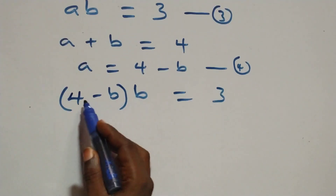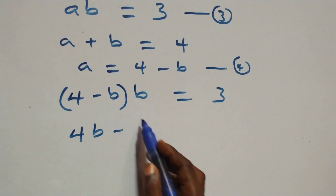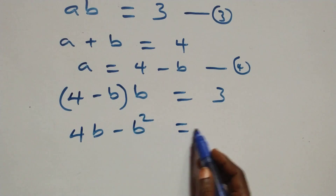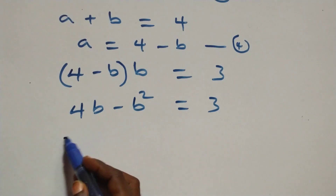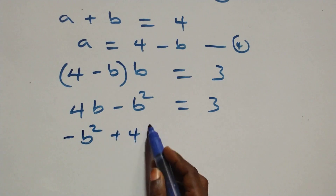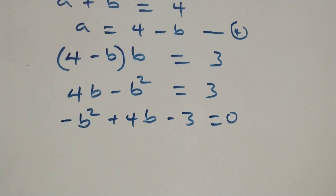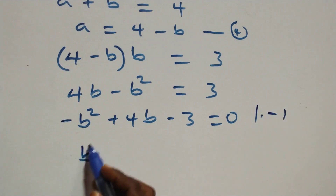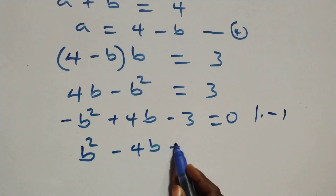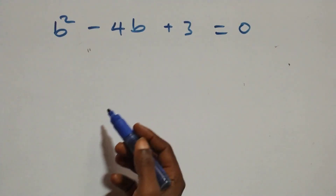Expanding the bracket: 4b minus b² equals 3. Rearranging: minus b² plus 4b minus 3 equals 0. Multiplying through by minus 1, this becomes b² minus 4b plus 3 equals 0.